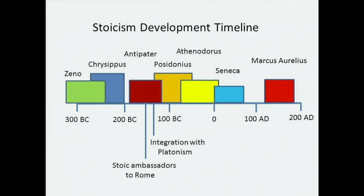Stoicism develops over the next 500 years or so. In the last couple of weeks of the class, we're going to be focused on writings by a Roman Stoic named Seneca. Several of you wrote scholar assignments about a book by Pierre Hadot on the inner citadel about Marcus Aurelius, a very late Stoic. So most of what we read for today on Stoic logic and physics describes Greek Stoic theories, closer to the earlier end.